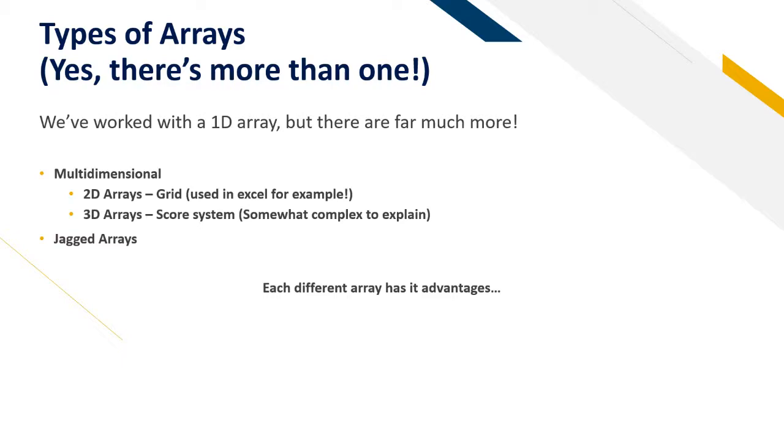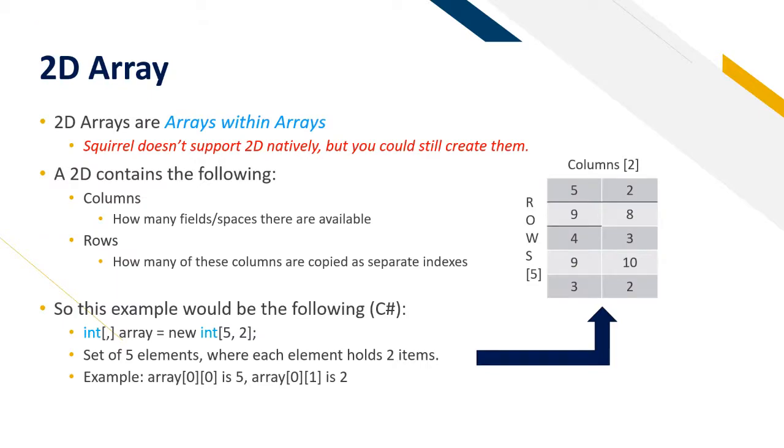We have a 2D array. Each different array has its advantages and 2D arrays are arrays within arrays. Squirrel doesn't support this natively but you can still create them another way. A 2D array contains the following: columns - how many fields or spaces there are available, and rows - how many of these columns are copied as separate indexes.